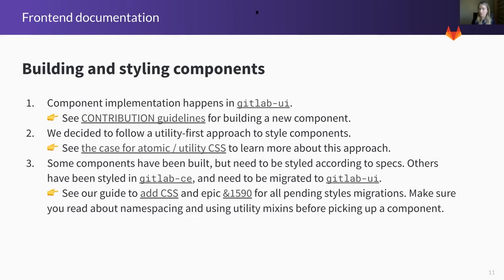In order to build and style the components, we needed to come up with a front-end framework and infrastructure that the team could follow to create consistent code. We ended up with a utility-first approach — there's a linked article in the slides that helps outline this approach, and I'd recommend checking it out. We have a number of components that have been built but not styled, so you may see a component on design.gitlab.com with a banner saying it doesn't yet conform to the correct styling. There are issues for that. There are also components that were styled in our product repository, GitLab CE, and those need to be migrated over to GitLab UI. There's a linked epic that contains all of those issues, open to community contributions.